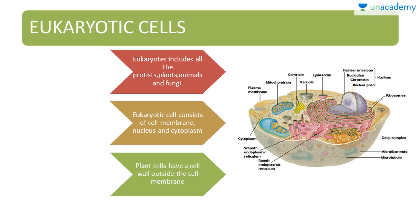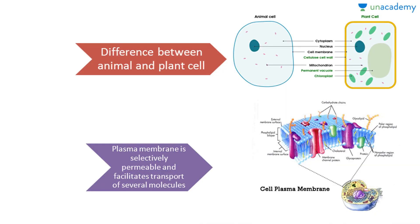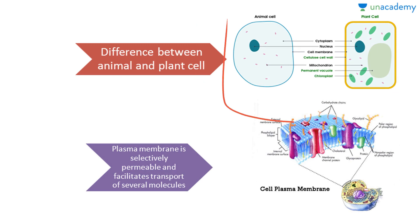Eukaryotes include all the protists, plants, animals, and fungi. If you remember the five kingdom classification, four of those kingdoms are eukaryotes. Eukaryotic cells consist of a cell membrane, nucleus, and cytoplasm. Plant cells additionally have a cell wall outside the cell membrane — an extra layer. You can see the difference between an animal cell and a plant cell in detail in this figure.